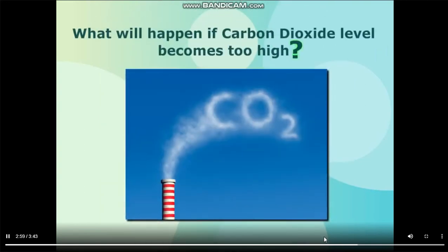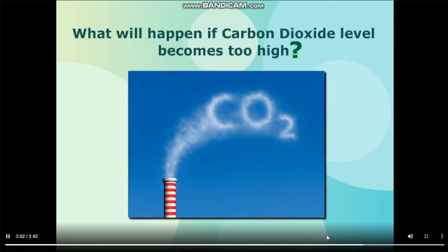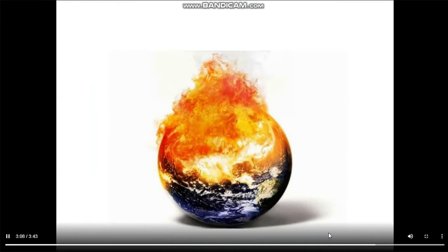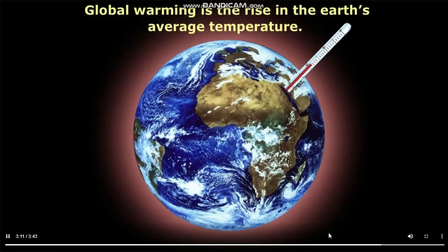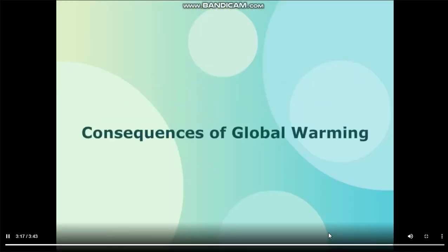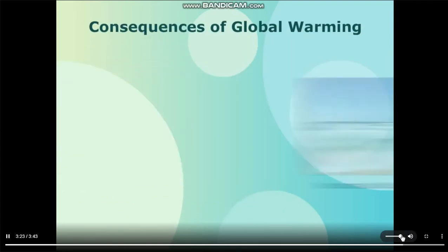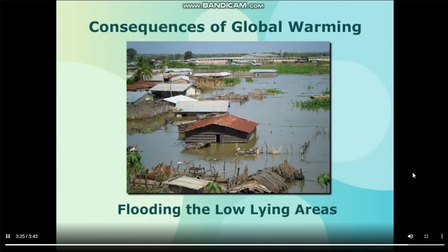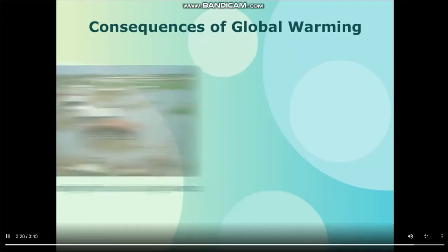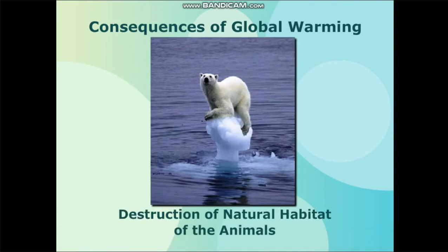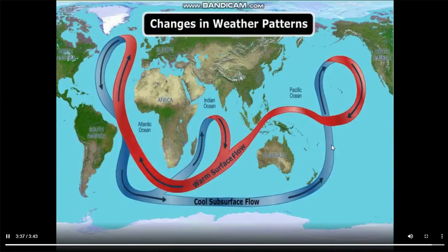Can you think what will happen if carbon dioxide levels become too high? Well, it will cause global warming. Global warming is the rise in the Earth's average temperature. Global warming has many consequences like melting of ice caps and glaciers, causing sea level to rise and flooding low-lying areas. This can destroy the livelihood of humans and the natural habitat of animals. Moreover, it can affect the world's weather and climate.